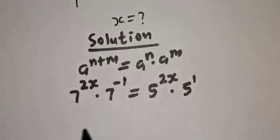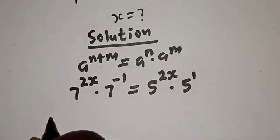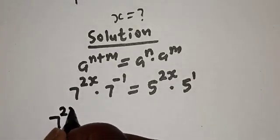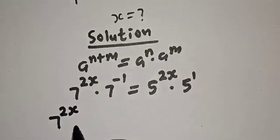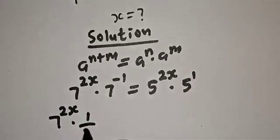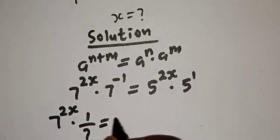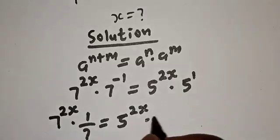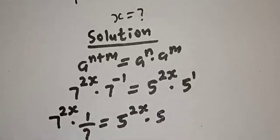And from here, we have 7 raised to power 2s multiplied by 1 over 7, equal to 5 raised to power 2s multiplied by 5.